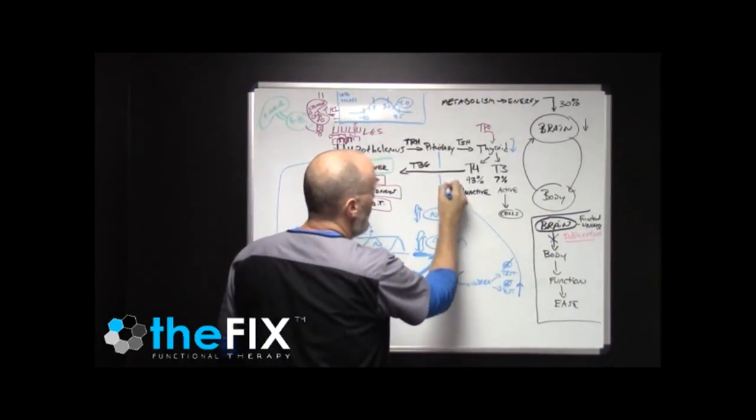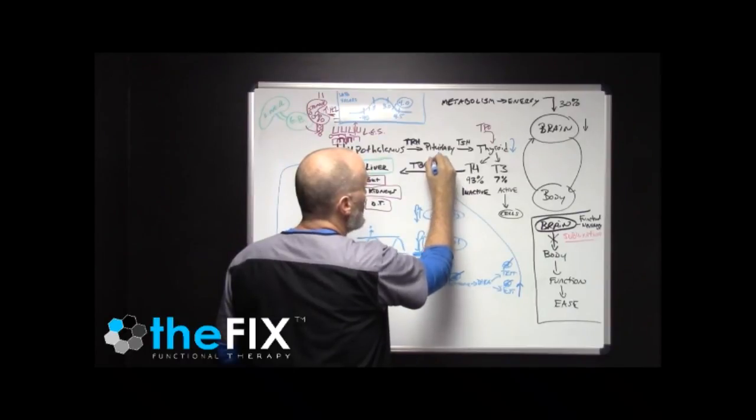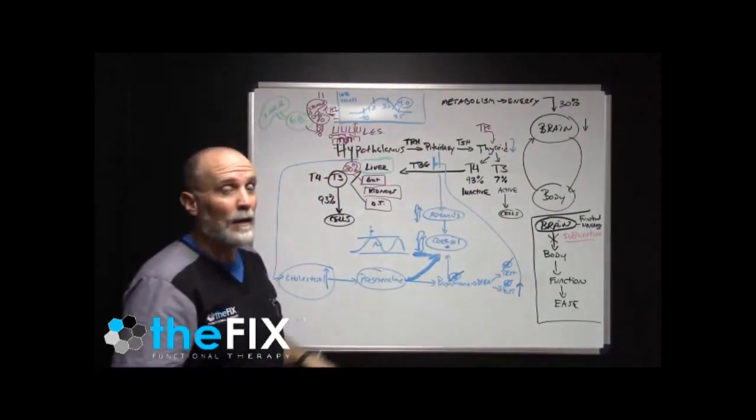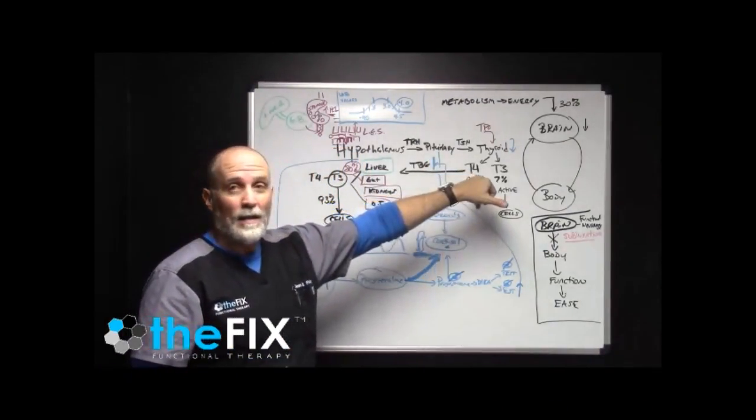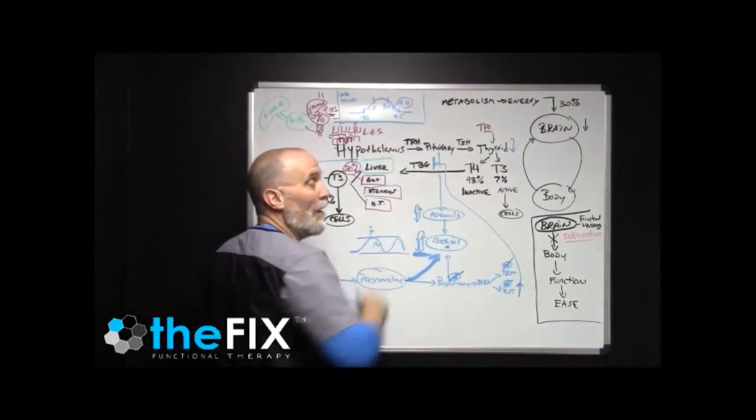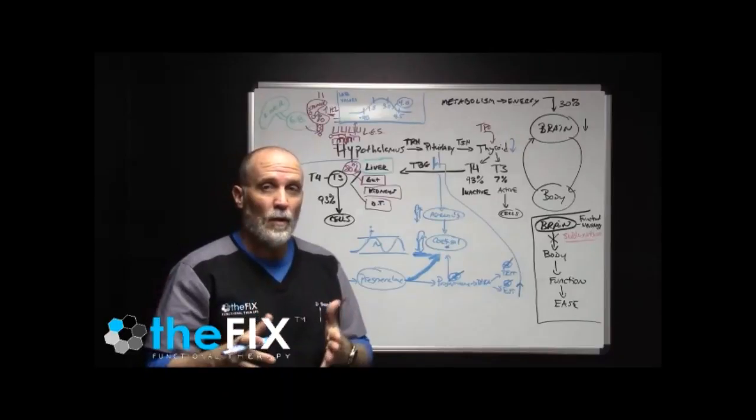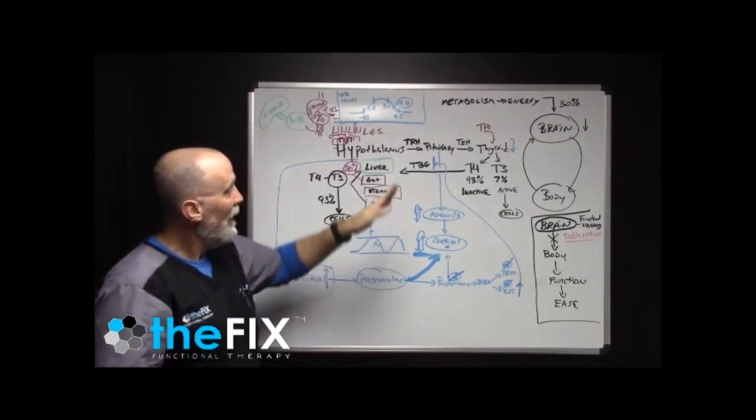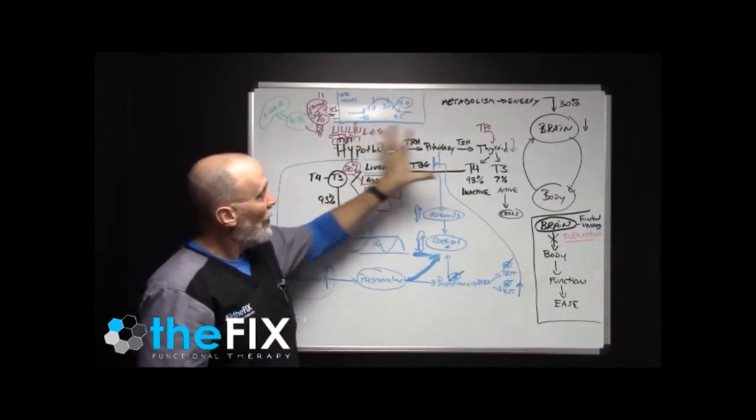So estrogen will actually come up and start binding to the receptor sites for thyroid binding globulin. What that does is that will block T4. That will block T4 and not let T4 bind to thyroid binding globulin. So what does that mean? That means that even if your lab values are normal, even if your digestive tract is totally normal, your liver is doing great, but you have a hormone imbalance because of adrenal fatigue,